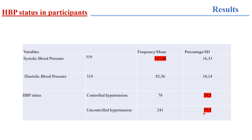A total of 241 participants had uncontrolled hypertension, indicating a prevalence of 75.5 percent. The results indicate that three-quarters of patients have uncontrolled blood pressure. This rate remained relatively high compared to other contexts, where rates did not exceed 70 percent in primary care patients. The highest proportion in comparative studies was reported in an Indonesian study at 68.1 percent.